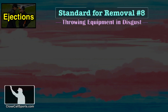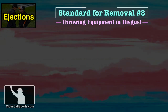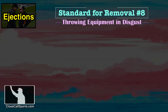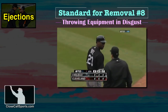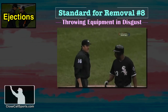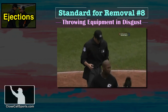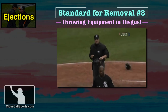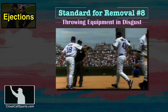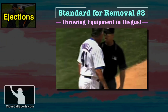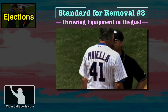The eighth standard for removal is throwing equipment in disgust. An equipment violation may be issued for less severe infractions of this provision. Words for Mike DeMuro — it looked like it was over, he walked away. Watch him throw the helmet though — the helmet goes back towards him, and that was it, automatic ejection. And here's Lou. The first ejection as a Cubs manager.